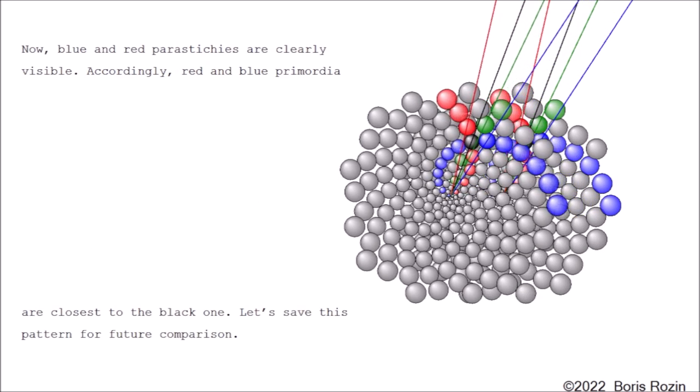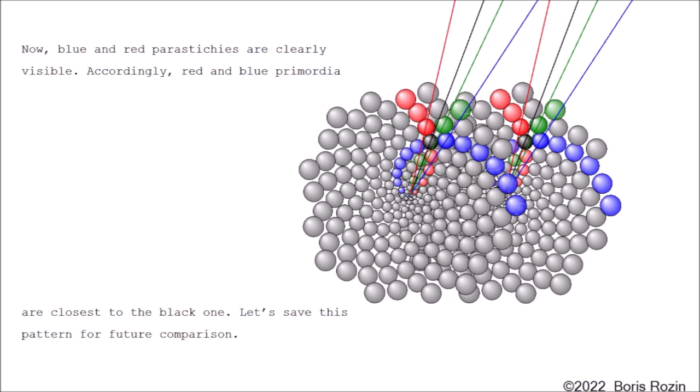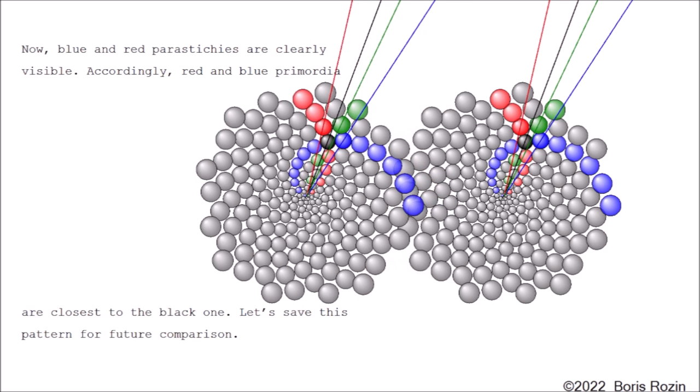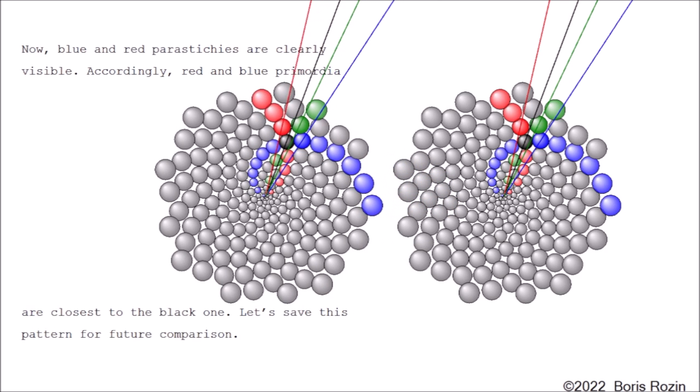Now, blue and red parastichies are clearly visible. Accordingly, red and blue primordia are closest to the black one. Let's save this pattern for future comparison.